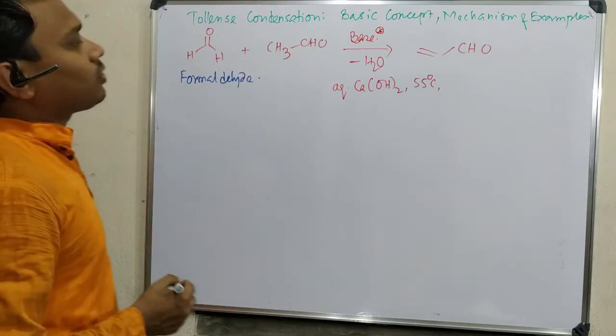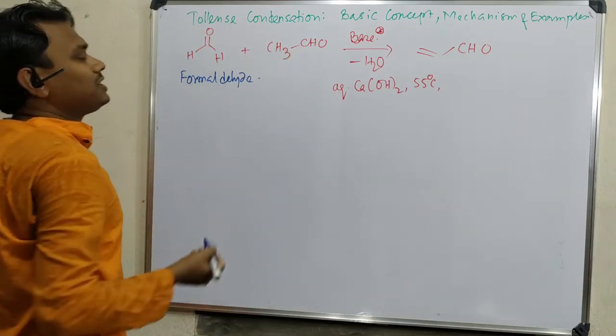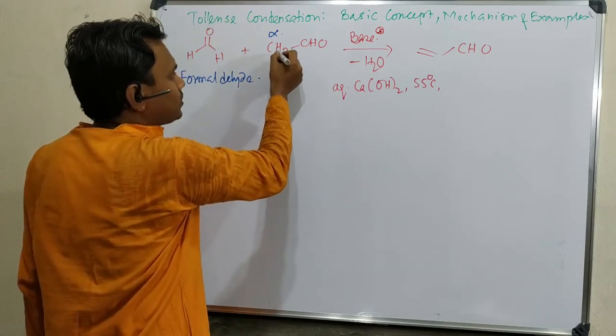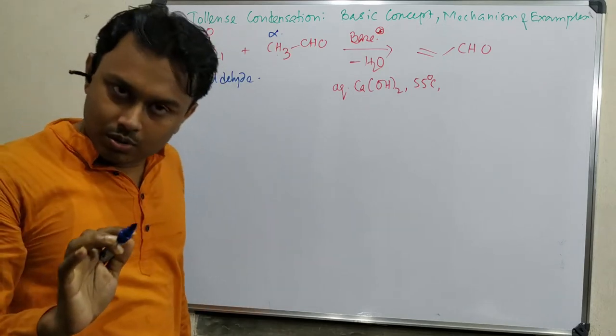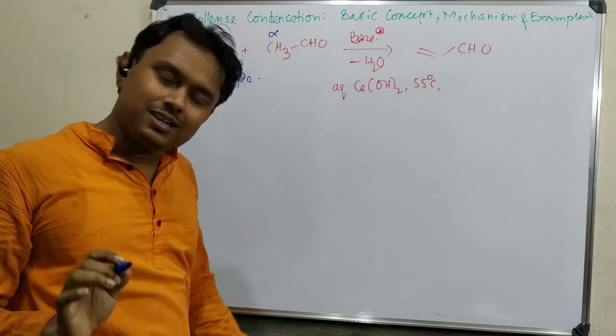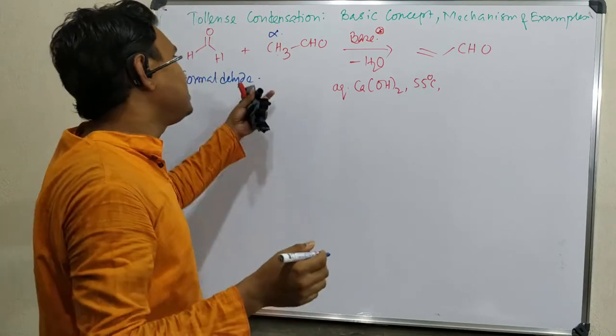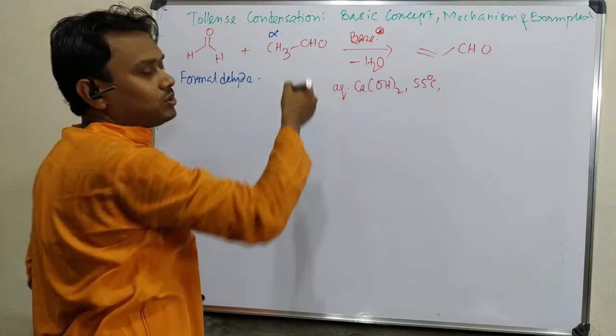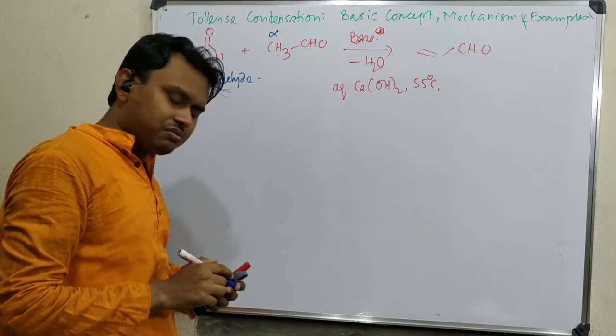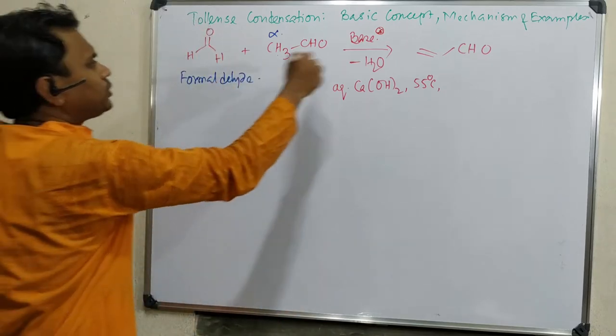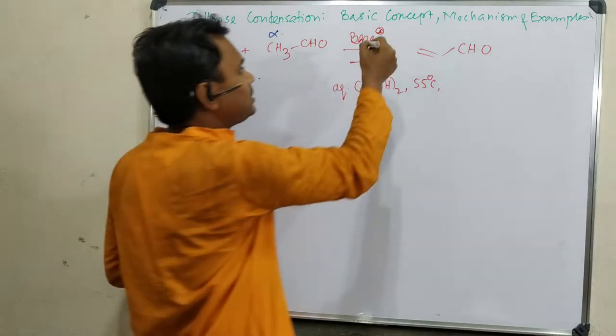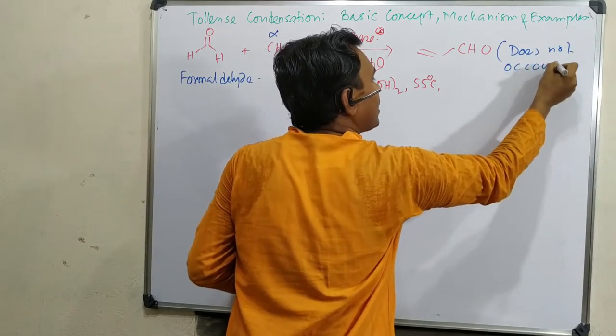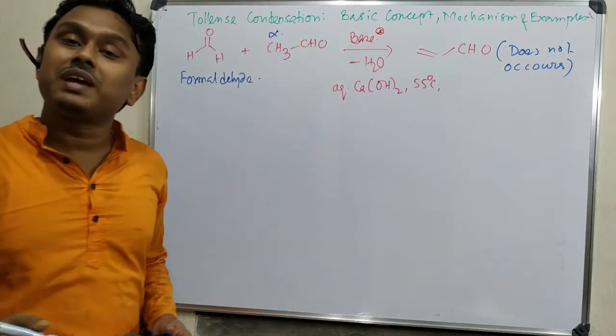Simply if we check the cross aldol condensation, this condition is one carbonyl should have alpha hydrogen and one carbonyl shouldn't have alpha hydrogen. Base will deprotonate this and that will attack here. One problem may be there that this can undergo self condensation, but that could be avoided by using selective base or slowly adding the aldehyde. Then we can expect this reaction, but actually this reaction does not happen.